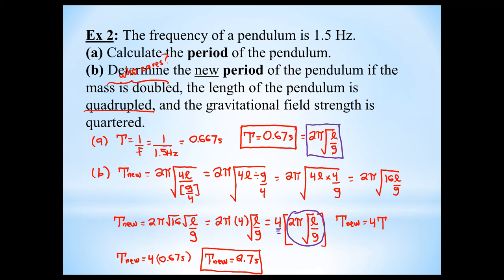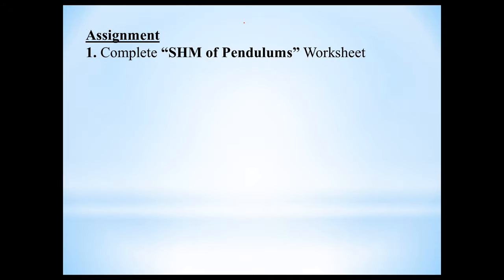Expect to see more of these variation-within-equation questions. One thing to watch out for is misleading information — like the doubled mass — because the period is actually independent of mass. That's it for this lesson. You can complete the assignment called 'Simple Harmonic Motion of Pendulums,' and in the next lesson we'll talk about simple harmonic motion of the mass-spring system.